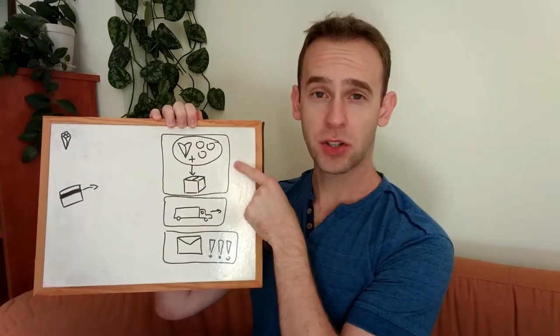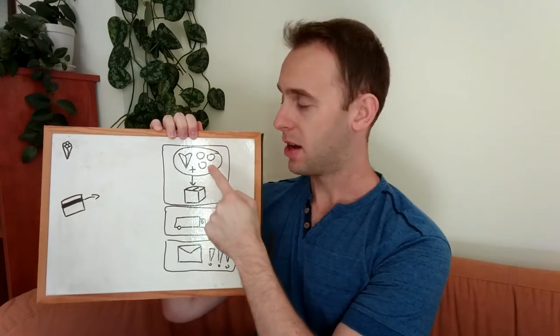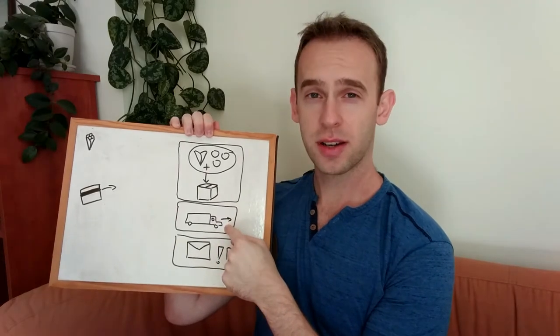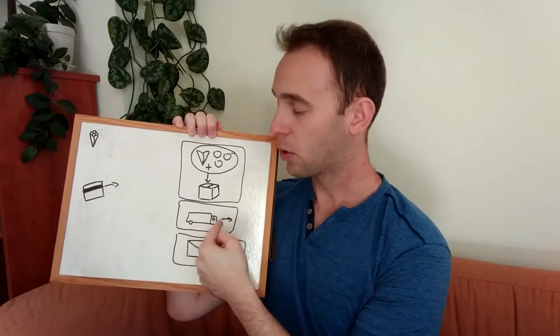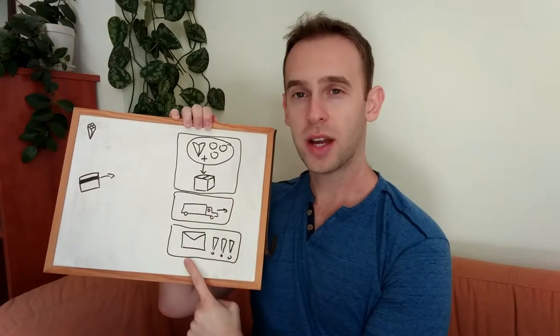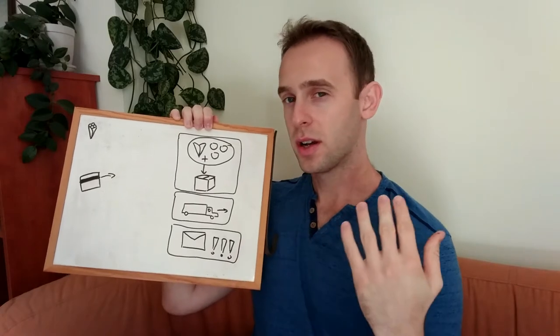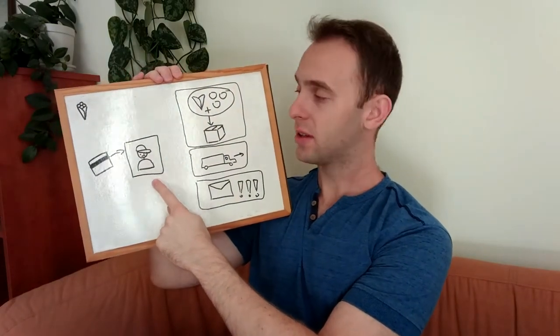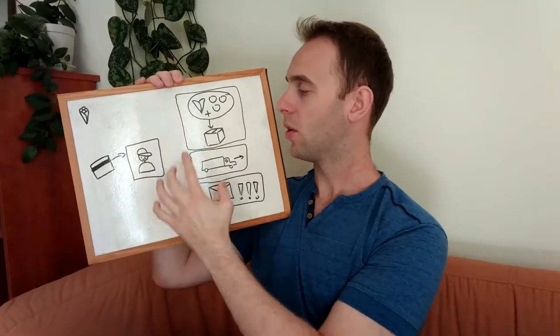The first solution we might imagine is as follows. Let's create some services that will do parts of the process. We have a packaging service that packages the needed ice cream flavors into a package, a delivery service that delivers the package to the customer, and a notification service that notifies the user via email or smartphone notifications.